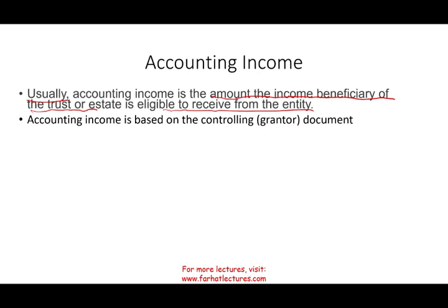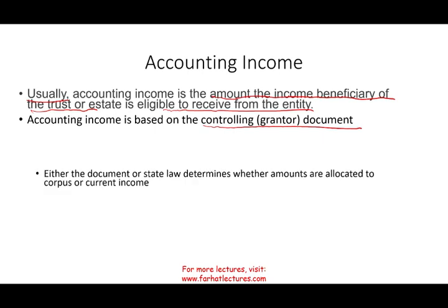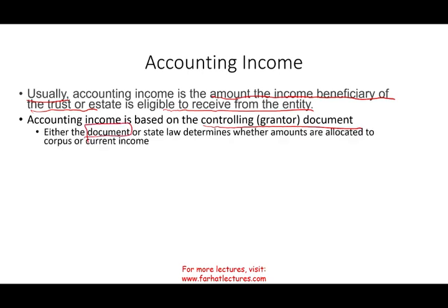Accounting income is based on the controlling or grantor document. The person that created the trust determines how much the beneficiaries are eligible to receive. Either the document states this, or if the document is silent, state law determines whether amounts are allocated to the corpus or to current income.